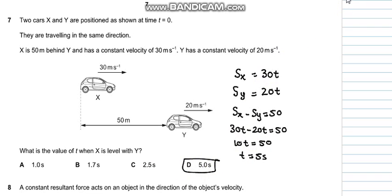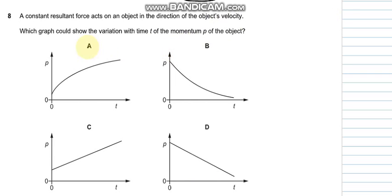Question number eight says which graph shows the variation with time of momentum of the object. We know the formula force equals rate of change of momentum, so change in momentum is force multiplied by time, and momentum is directly proportional to time. So this would be a linear curve. So C seems to be the appropriate answer.